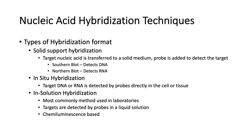Then we also have in-situ hybridization. From the name 'in-situ,' this means that the target DNA or RNA is detected by probes directly in the cell or tissue. And then we have in-solution hybridization, which is the most common method used in laboratories. This is where targets are detected by probes in a liquid solution, and usually this is chemiluminescence-based, so you can detect the chemiluminescence either visually or using a machine.